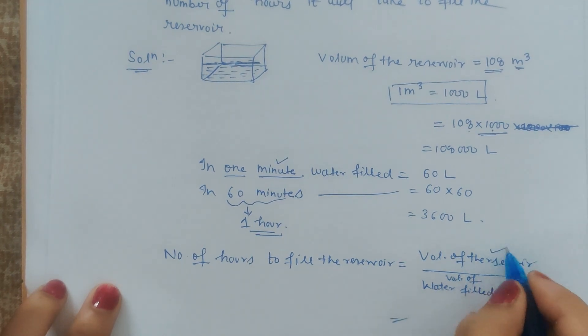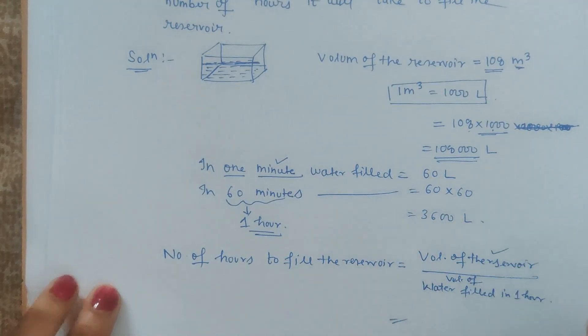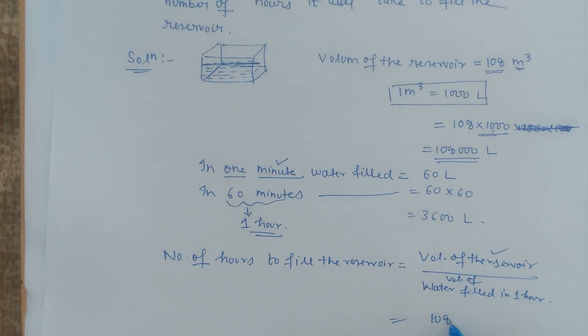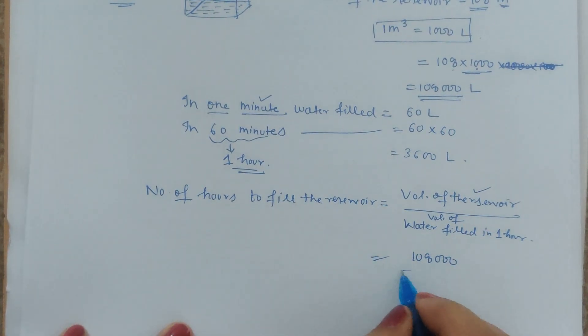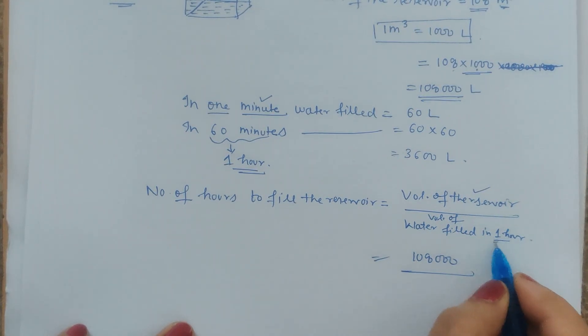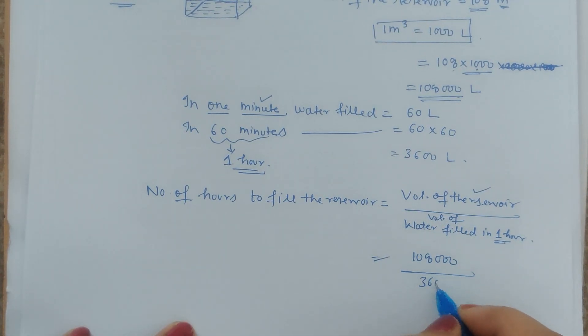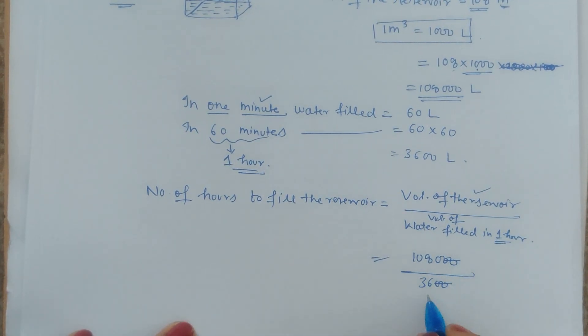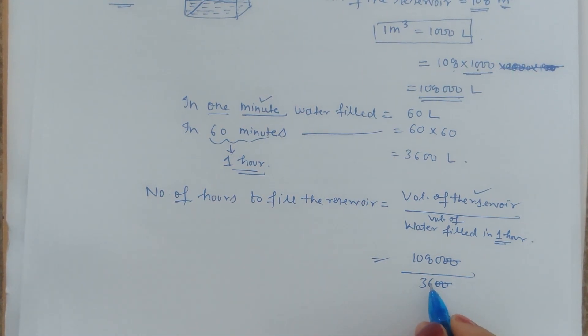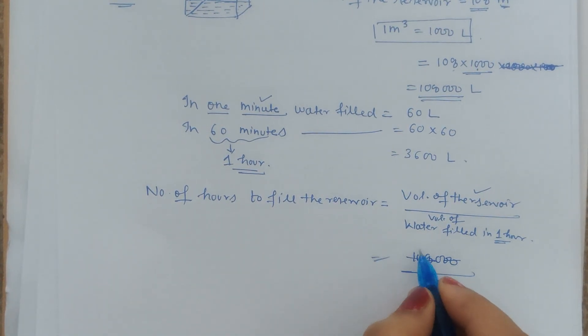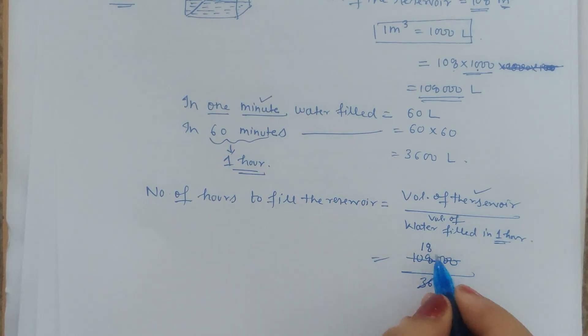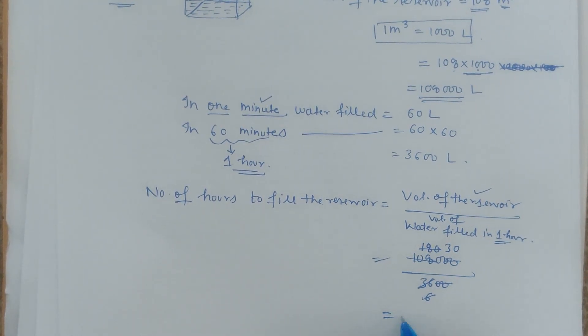The volume of the reservoir is 108,000. Volume of water filled in one hour is 3,600. So 108,000 upon 3,600. This double zero gets cancelled and we calculate: it will take 30 hours to completely fill the reservoir.